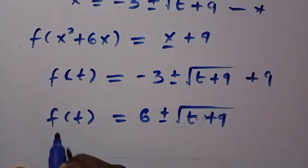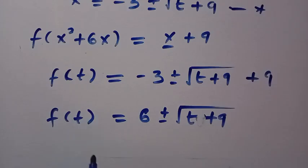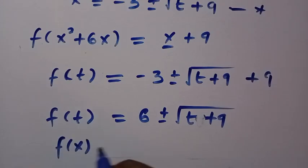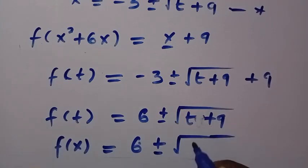So we've successfully made f(t). Let's change t to x. By changing t to x, we have f(x) = 6 ± √(x + 9).